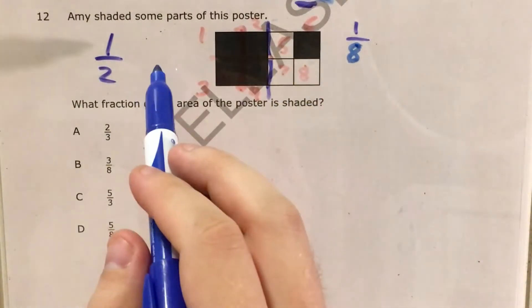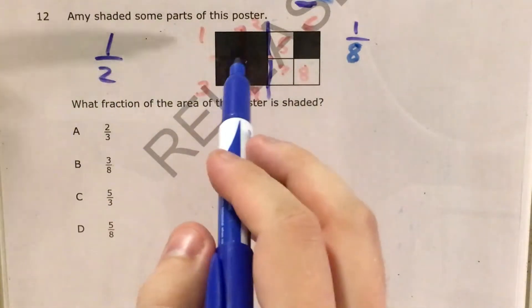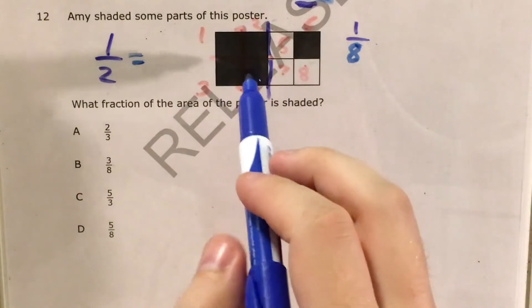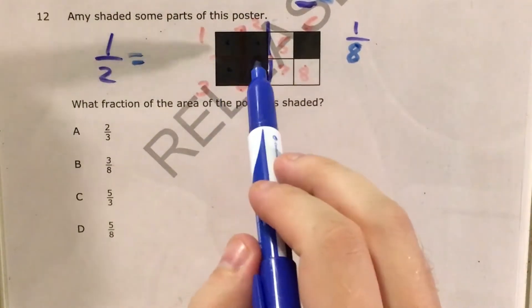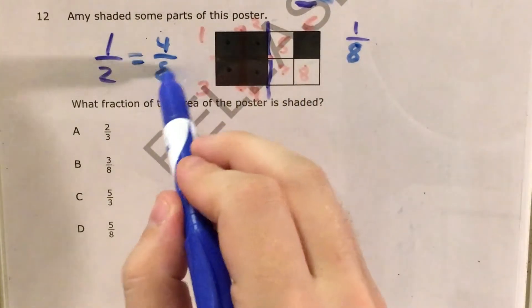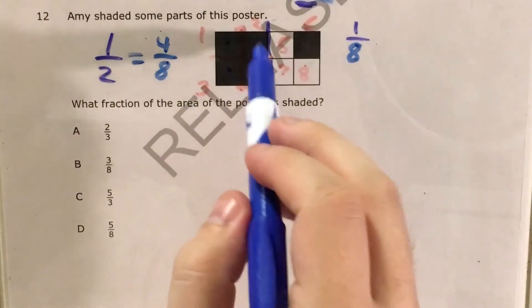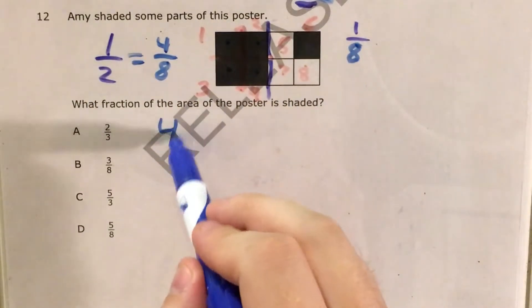So that means that this part over here is one eighth. And now I can use an equivalent fractions trick or I can just count here to say that one half, this whole piece right here, is the same thing as one, two, three, four of these shaded pieces out of eight in the total diagram. So my left part of the poster represents four eighths. My right part of the poster represents one eighth.